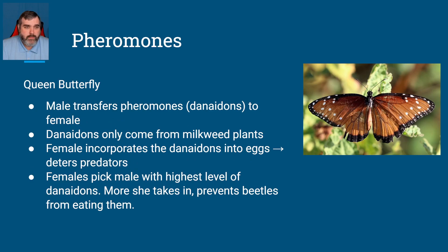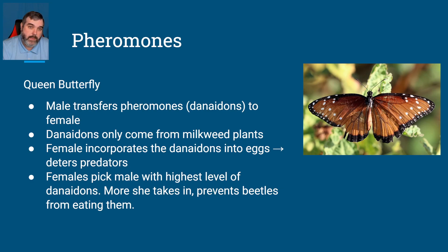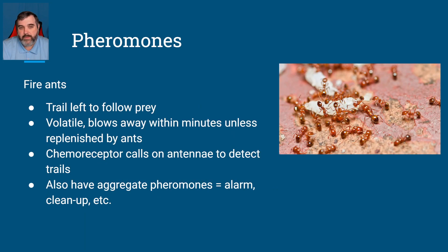Here's another example: the queen butterfly. The male transfers pheromones called danaidins to the female. Danaidins only come from milkweed plants. The female incorporates them into the eggs, which actually deters predators from eating the eggs. Females pick males with the highest level of danaidins. Since this deals with reproduction, it's a priming type of interaction.